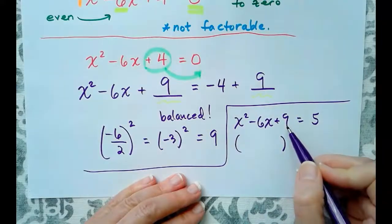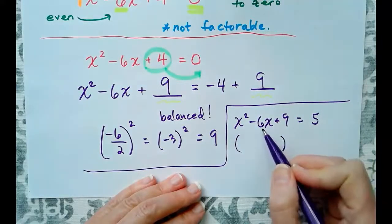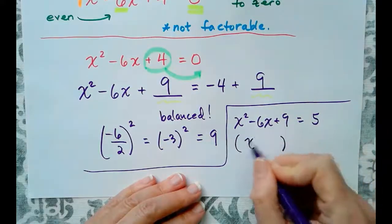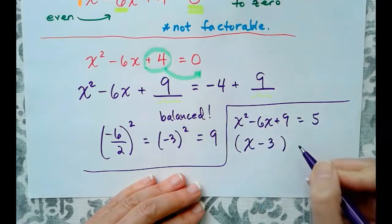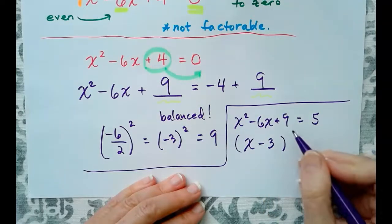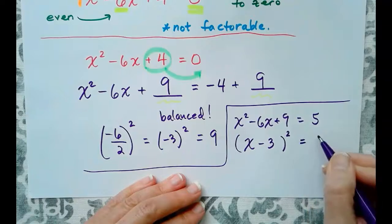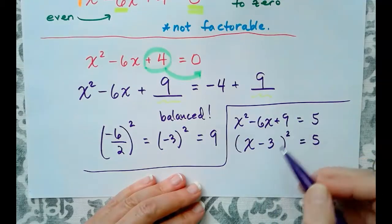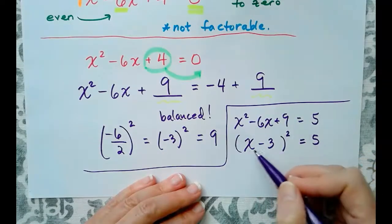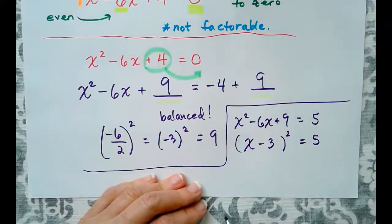So factors of 9 that add up to -6 are x - 3 times x - 3, or (x - 3)² = 5. So this was a perfect square trinomial.